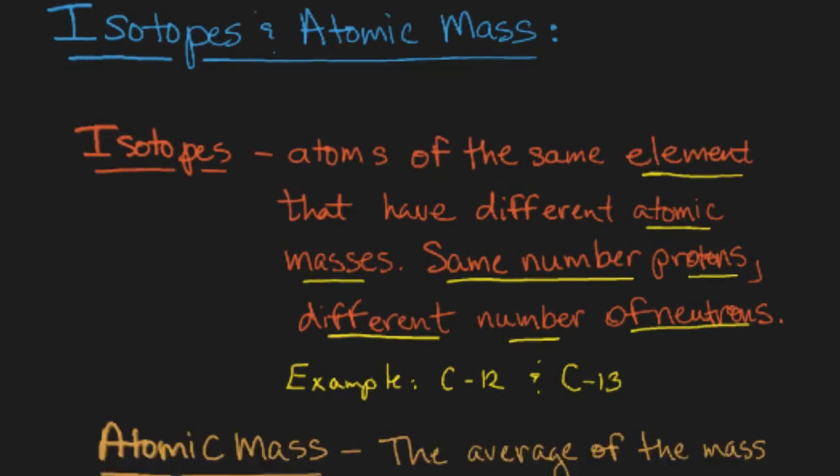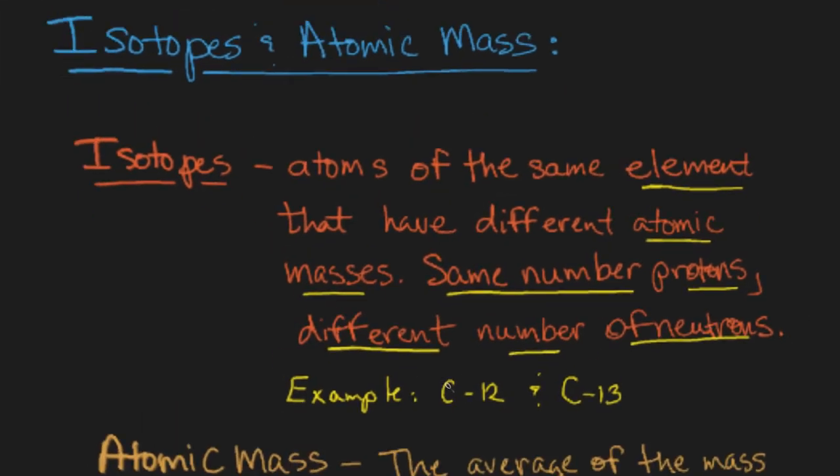For example, when you see C-12 and C-13, that's what that's talking about. They're stable isotopes in nature, mostly of carbon-12 and partially of carbon-13.